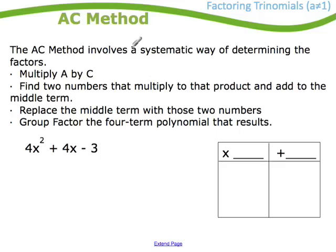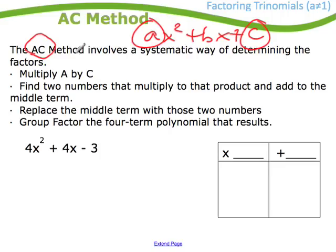Let me show you how to do it. So what you do is, it's called the AC method. Remember, the general formula looks like this. So there's something I have to do with the A and the C. So what I do is I multiply them. So 4 times minus 3 is a minus 12. And the middle term here is a 4. So what I want to do is I want to get two numbers, find two numbers, that multiply to that product, to AC, multiply to this, and add to 4.